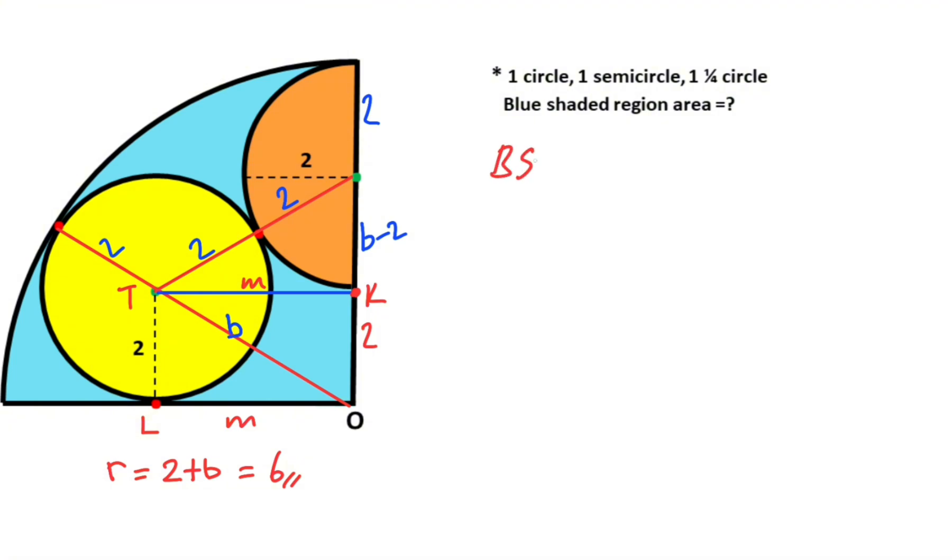So blue shaded region area equals π times r squared over 4 minus yellow circle area, right? π × 2 squared minus semicircular area, right? π × 2 squared over 2.